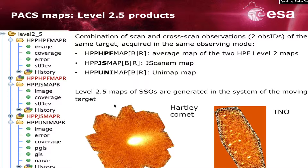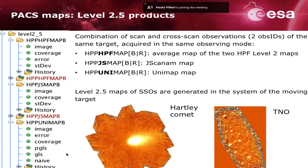Level 2.5 products are the combination of two observations — the scan and the cross-scan — belonging to the same target. At this level, we have three different mappers: the high-pass filter map, which is simply the average of the two Level 2 high-pass filter maps; the JSCANAM map; and the Unimap map. The naming convention for each mapper is highlighted here. I invite you to consult the PACS Data Reduction Guide for details on all the datasets belonging to each product.